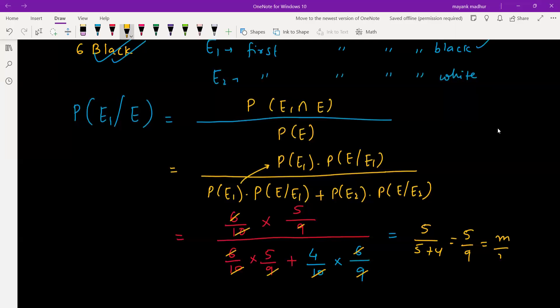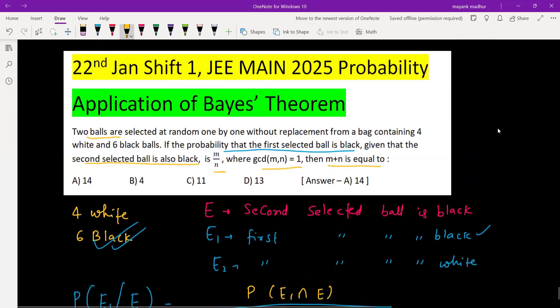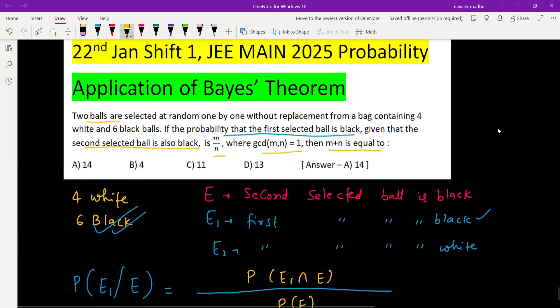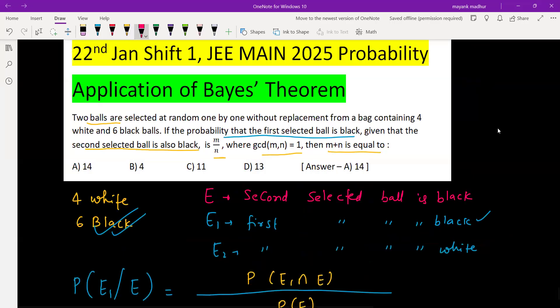Now they told you to compare this with M by N, five by nine. Yes, this is coprime, their HCF is one. So five plus nine is 14. 14 is the answer for this question, which is option A. Option A is given, 14 is the answer.